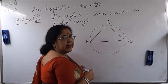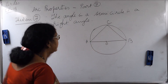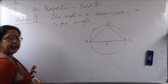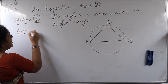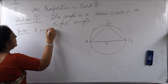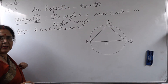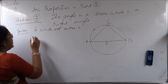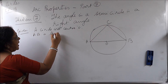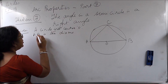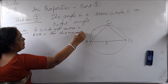We already know angle AOB is 180 degrees, so angle ACB is 90 degrees. Let us write it in proof form. Given is a circle with center O — that appears in every theorem. Next, AB is the diameter, or you can say AOB is the diameter of the circle.